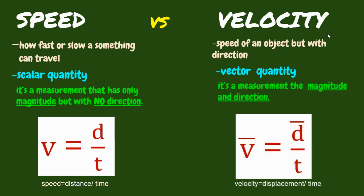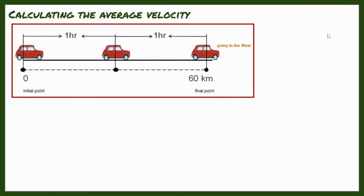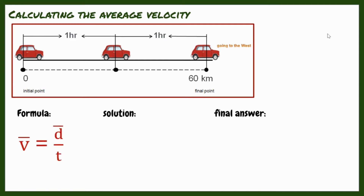Since velocity is a vector quantity, average velocity can be calculated as: average velocity equals displacement over total time. You can also write it this way. The formula is: average velocity equals displacement divided by total time.